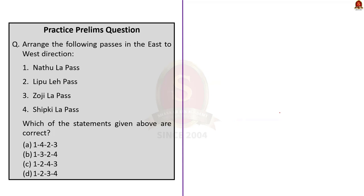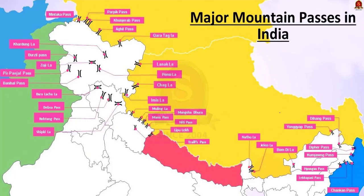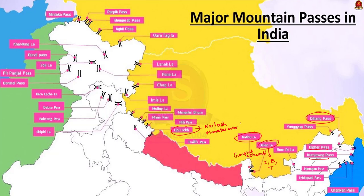Our next question is a map-based question about mountain passes in India. Starting from the east, Arunachal Pradesh has important passes: Diphu Pass, Yongya Pass, Chaukan Pass, Kumbang Pass and Dihang Pass. The two important mountain passes of Sikkim are Jelep La, which connects India, Bhutan and Tibet, and Nathu La, which connects the capital Gangtok with the Chumbi Valley. In the Uttarakhand region, most passes connect with Tibet. The Lipulekh Pass is primarily used by pilgrims going to Kailash Mansarovar Lake in Tibet. Other important passes include Niti Pass, Mana Pass, Muling La and Mangsha Dhura.